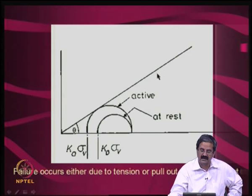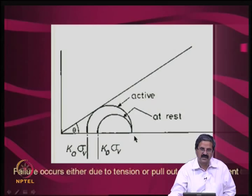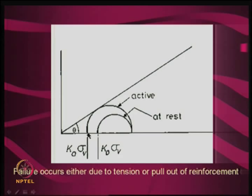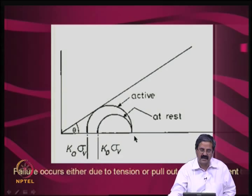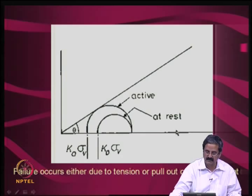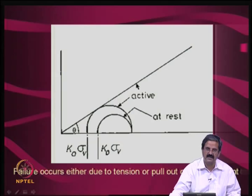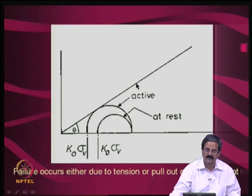There is also a possibility of slight yield. Our objective is to avoid two conditions: tensile failure should not happen, and pull-out failure should not happen. If there is a slip and you keep increasing K₀·σ_v, the failure surface may touch the failure line. The whole principle is: prevent tensile failure of the reinforcement and prevent pull-out failure.